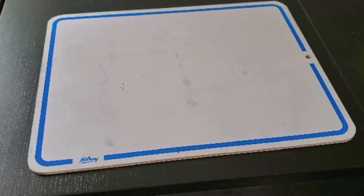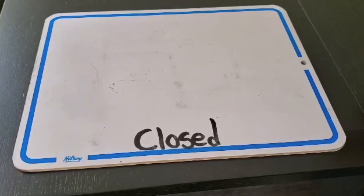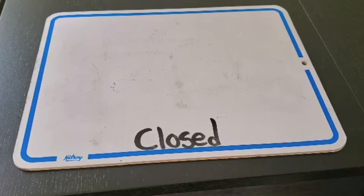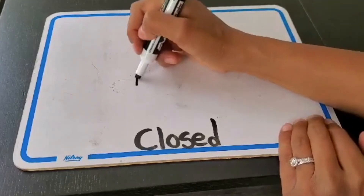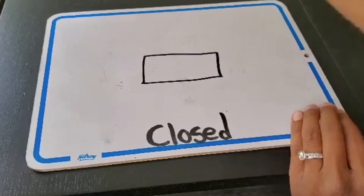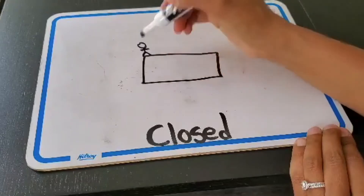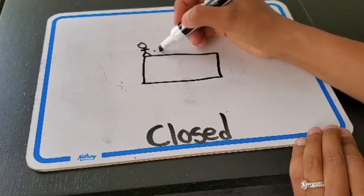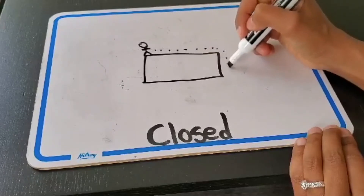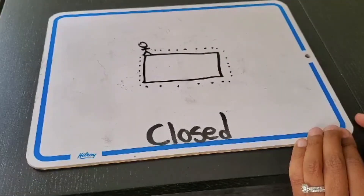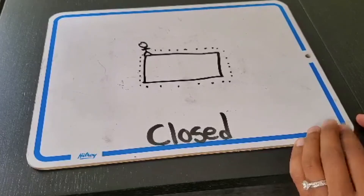There are two other types of lines I want to talk about today — they are called closed and open. A closed line is a line where you can get back to where you started without turning around. For example, imagine you're standing at one point on a shape. If you can walk all the way around and get back to where you started, that's a closed line.